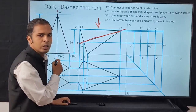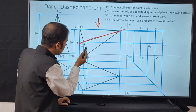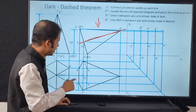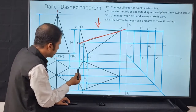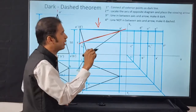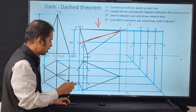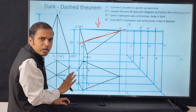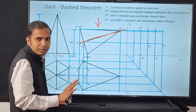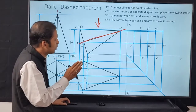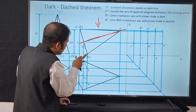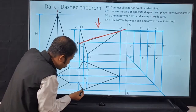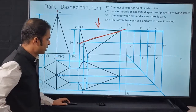CD and DE are already dark from Rule 1, so leave them. EF is also already dark from Rule 1. For FA: F is here, A is here — FA is not in between the arrow and axis, so FA will be dashed. That completes the base edges.